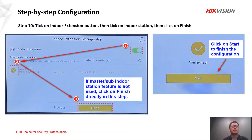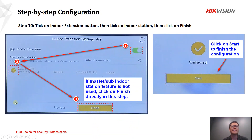Step ten is also about the door station. If you don't use the master/sub door station feature, just click finish. If you do use the master/sub door station feature, enable it and choose all the indoor stations, then click finish. Wait for a moment and click start to complete the configuration.